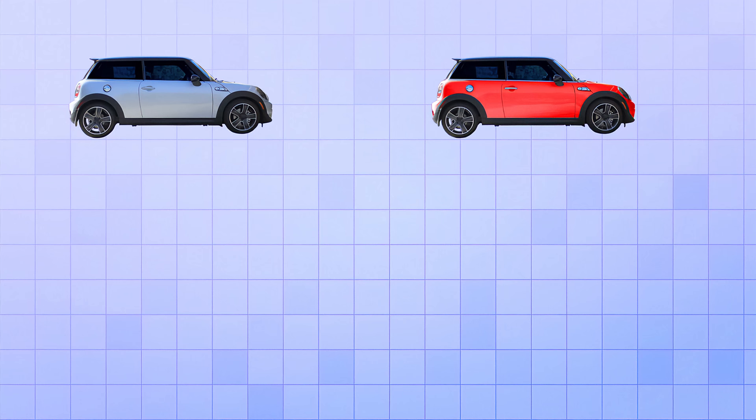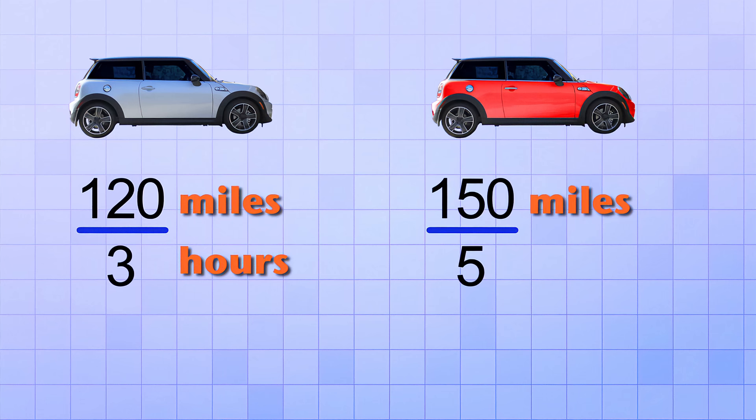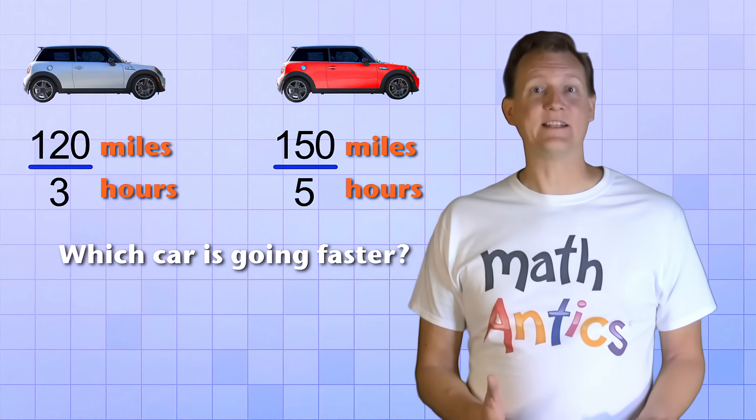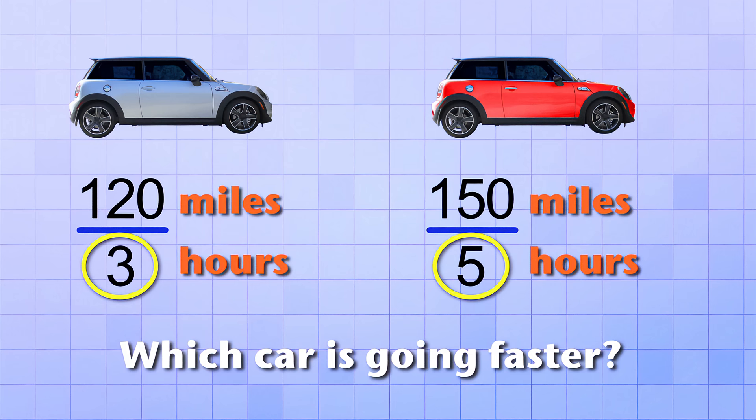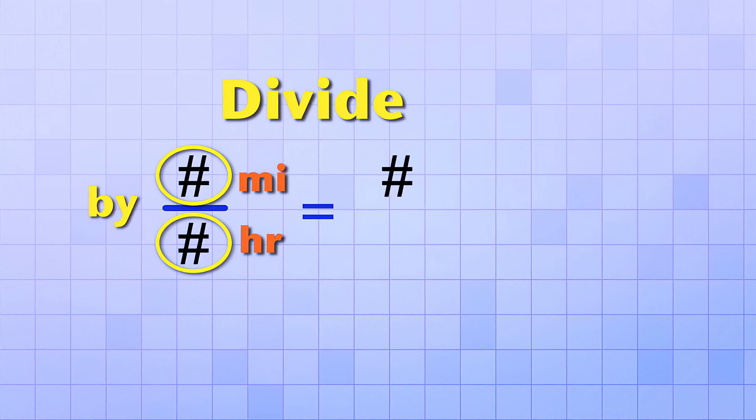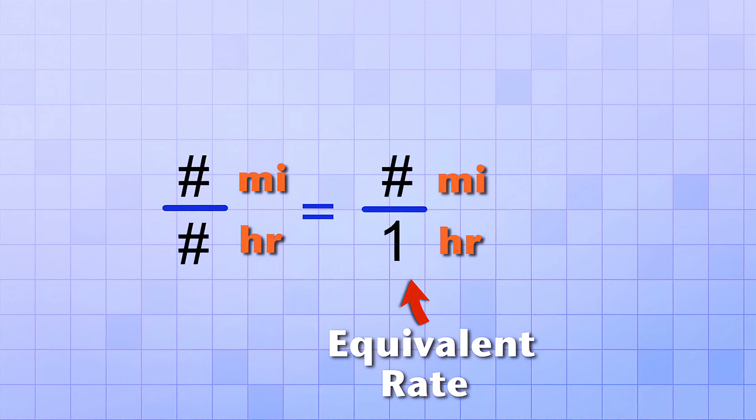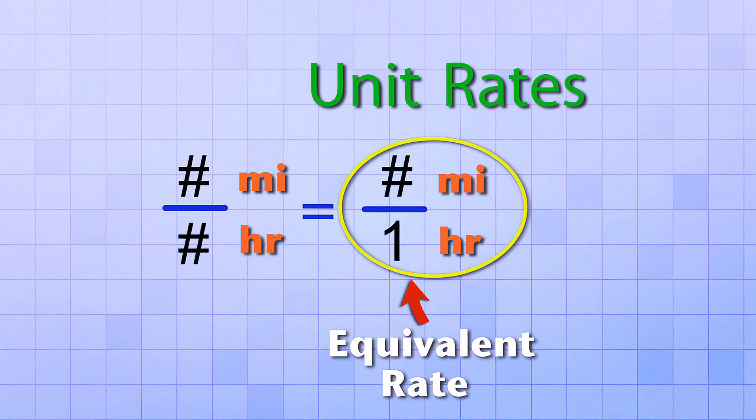For example, imagine two cars driving at two different rates. The first car's rate is 120 miles per 3 hours, and the second car's rate is 150 miles per 5 hours. Which car is going faster? Well, it's not all that easy to tell when the rates have different bottom numbers. Fortunately, it's really easy to change a rate so that it has 1 as the bottom number. All you have to do is divide the top number by the bottom number. The answer you get is the top number of the new equivalent rate, and the bottom number is just 1. Rates like this are called unit rates, because unit means 1.